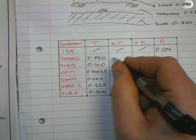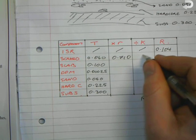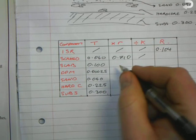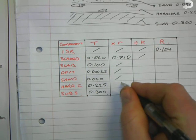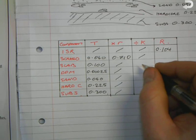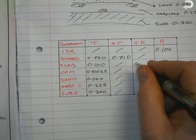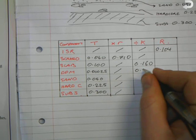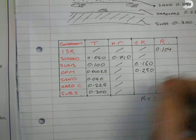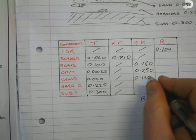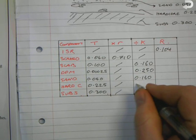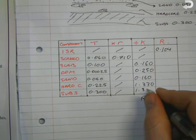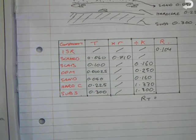For the screed we're given resistivity, so we write in 0.710. We're not given conductivity, so we can go ahead and calculate resistance from that. For each of the remaining layers we're given conductivity, so we can mark off resistivity. The slab conductivity is 0.160, DPM conductivity is 0.250, sand conductivity is 0.160, hardcore conductivity is 1.330, and subsoil conductivity is 1.800.